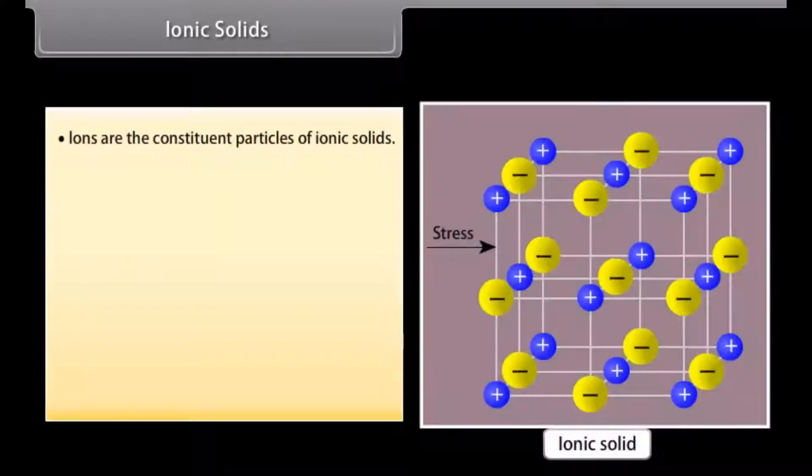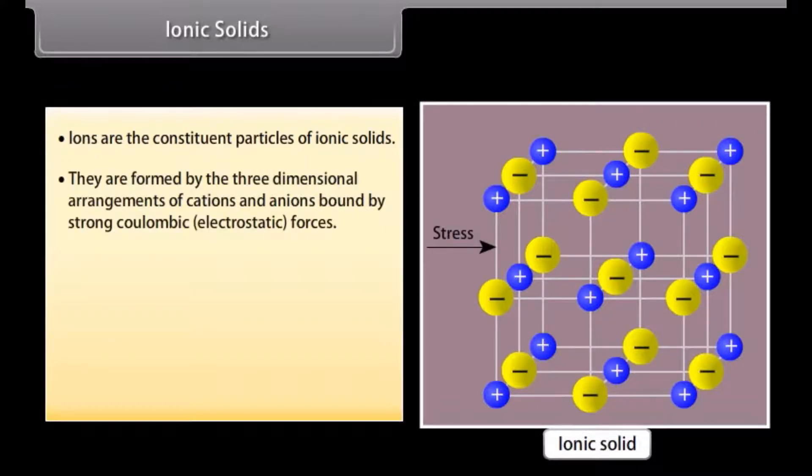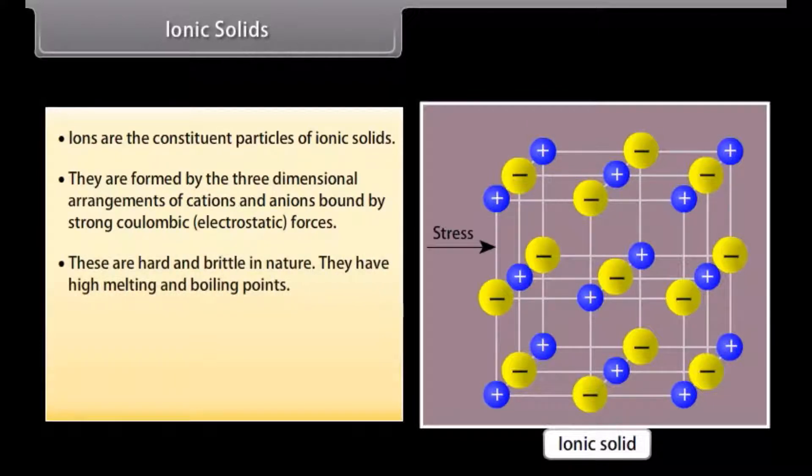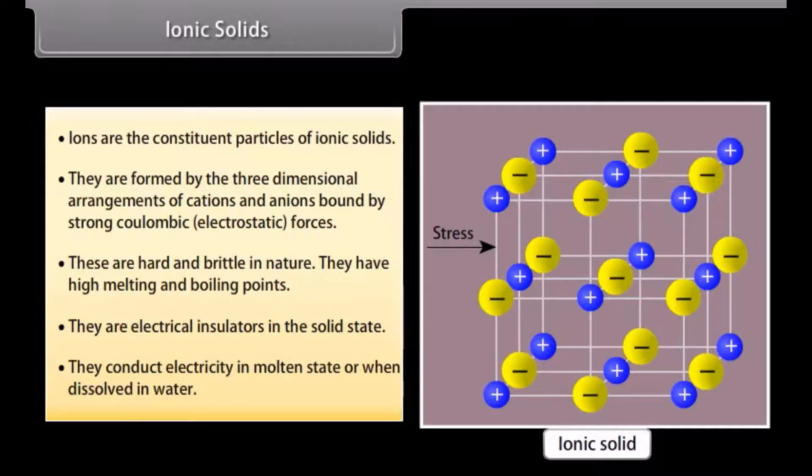Ionic solids. Ions are the constituent particles of ionic solids. They are formed by the three-dimensional arrangements of cations and anions bound by strong coulombic electrostatic forces. These are hard and brittle in nature. They have high melting and boiling points. They are electrical insulators in the solid state. They conduct electricity in molten state or when dissolved in water.